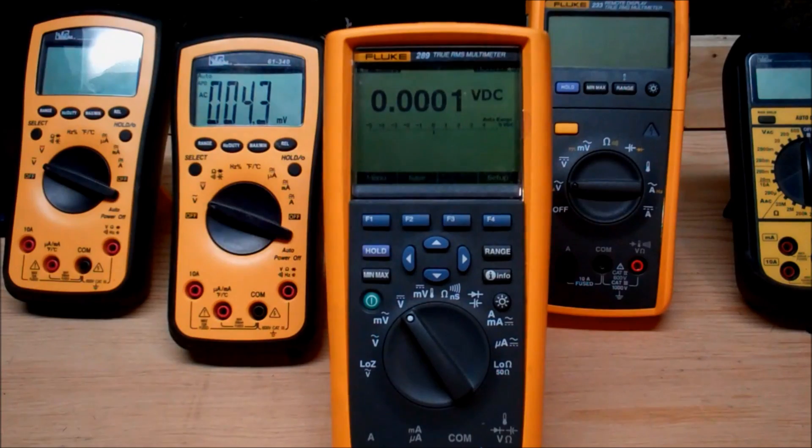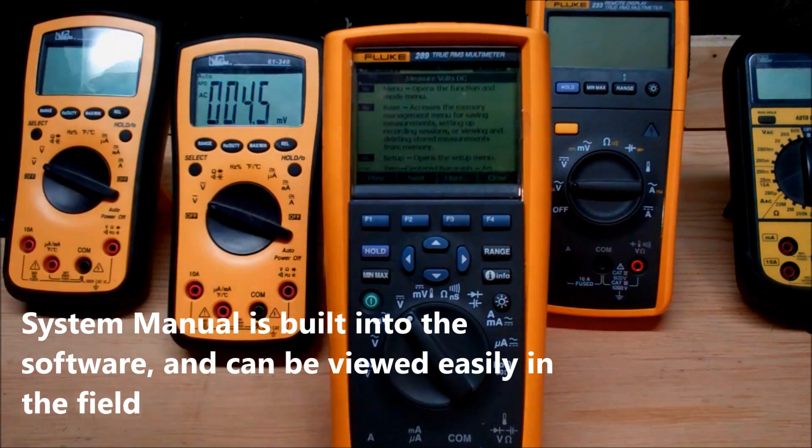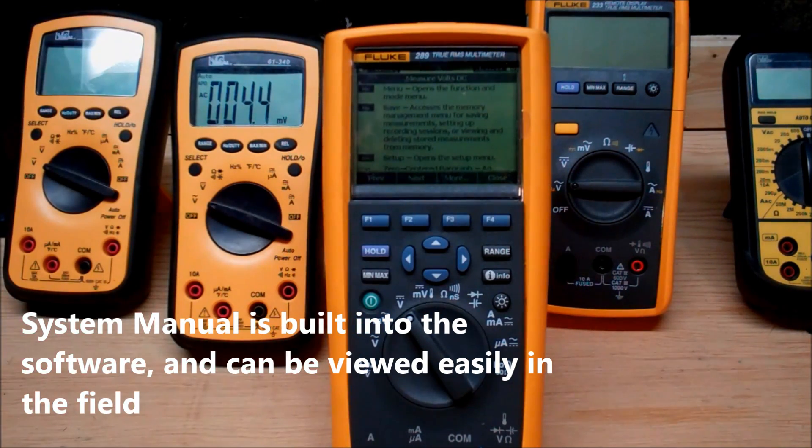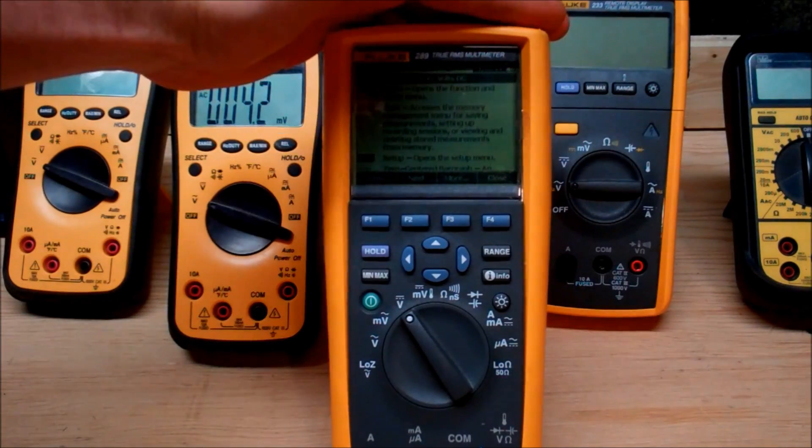One really clever idea by Fluke is they've included the manual with the system, but more importantly they've included it in the multimeter. When you click the info button you have a complete layout of every little feature included in this multimeter. It's extremely convenient because this thing does offer so many abilities. If you ever need to make a reference, no problem.